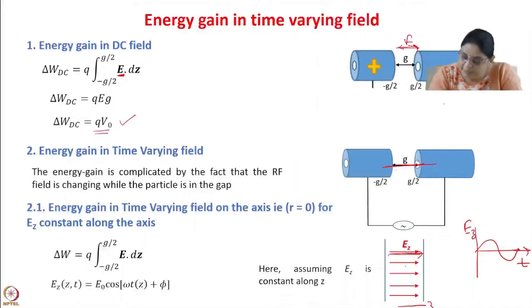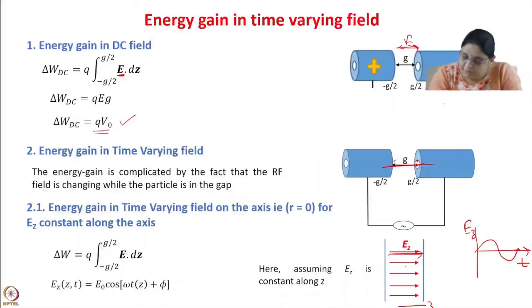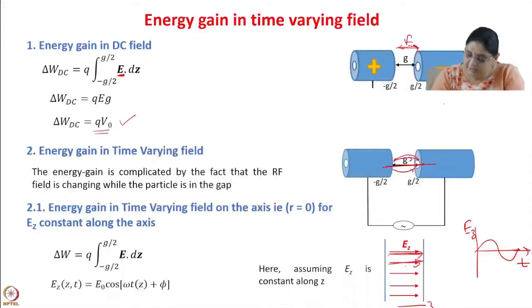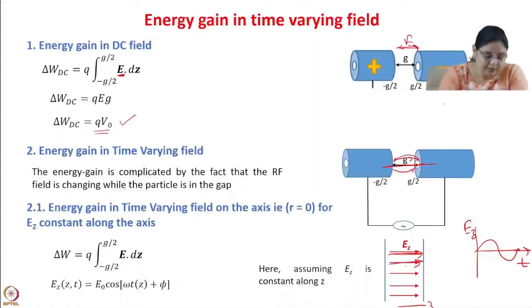In real life there will be variation because there is a gap, so there will be fringing fields and the field will not be straight lines. But for the time being, let us calculate when the electric field is constant with z, with no variation with z. The energy gain is again given by Q times the integral of E dot dz integrated over the length of the gap.